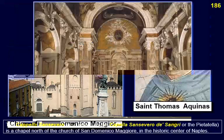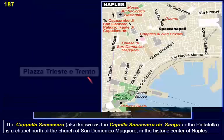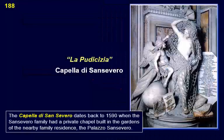The Cappella Sansevero, also known as the Cappella Sansevero de' Sangri or the Pietatella, is a chapel north of the Church of San Domenico Maggiore in the historic center of Naples. The Cappella Sansevero dates back to 1590, when the Sansevero family had a private chapel built in the gardens of their nearby family residence, the Palazzo Sansevero.